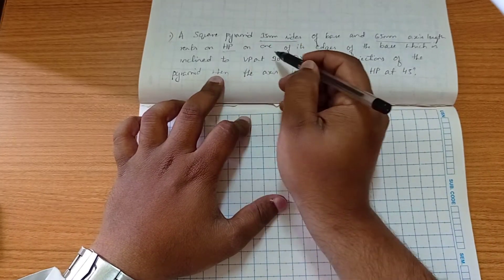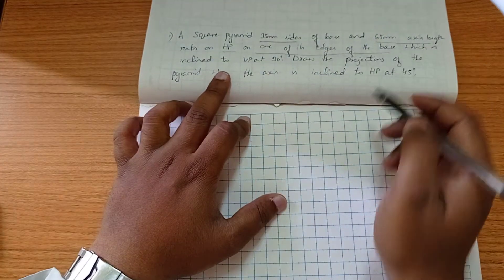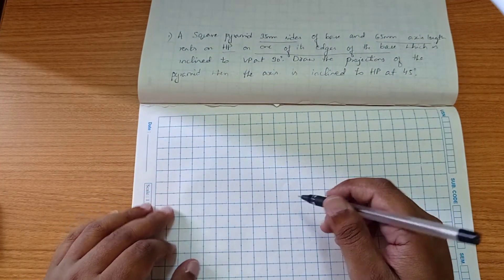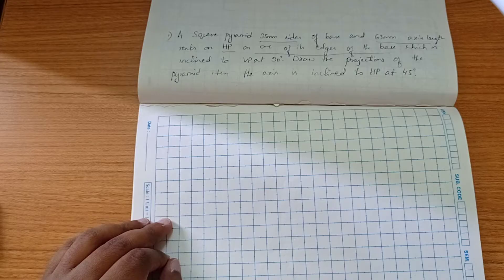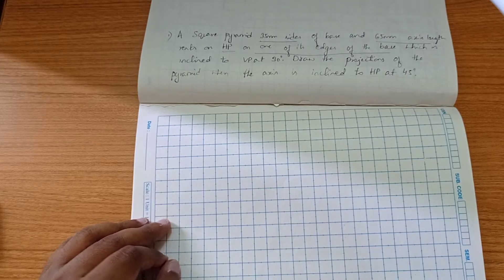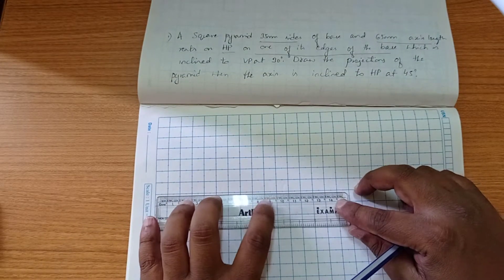The pyramid rests on HP on one of its edges of the base, so we need to construct with respect to the edge. First we are going to draw an XY line here.